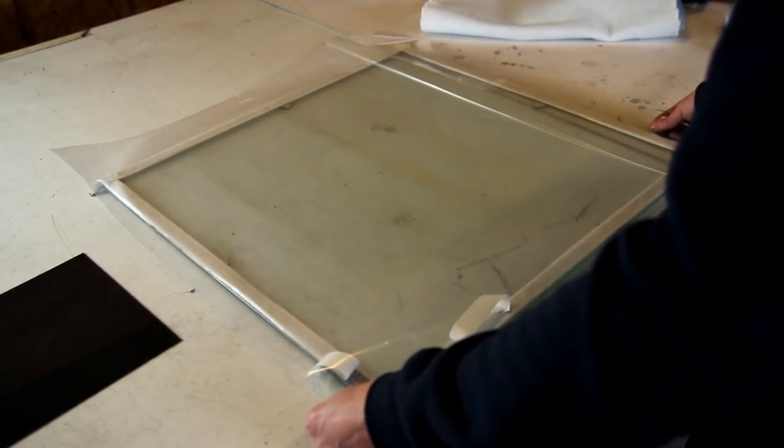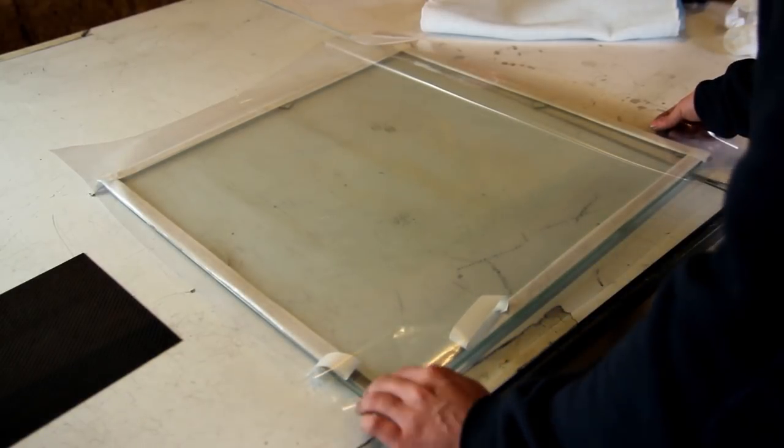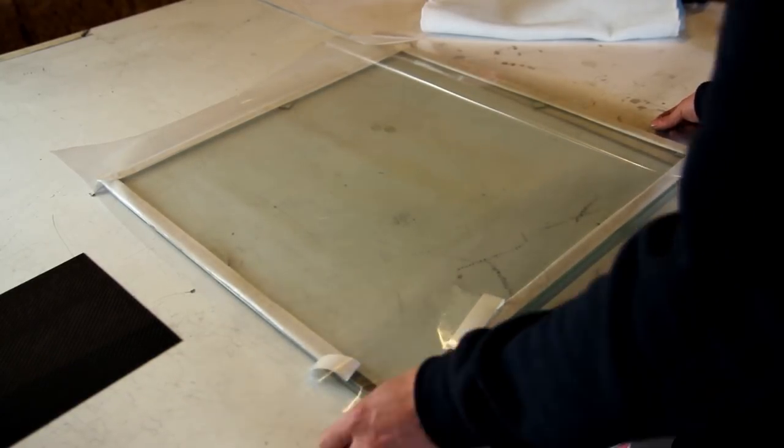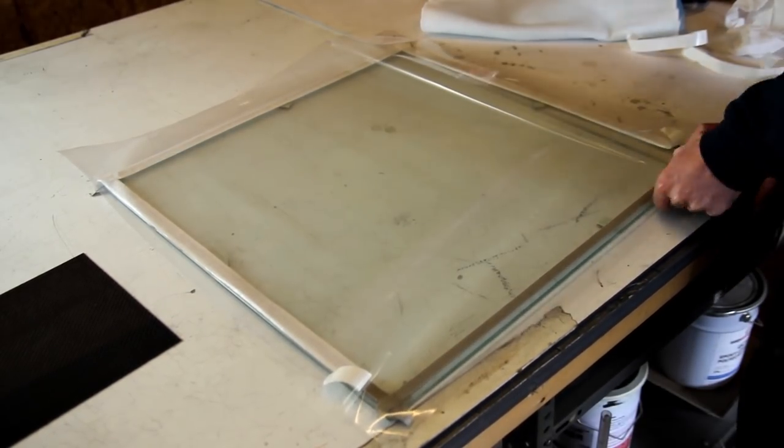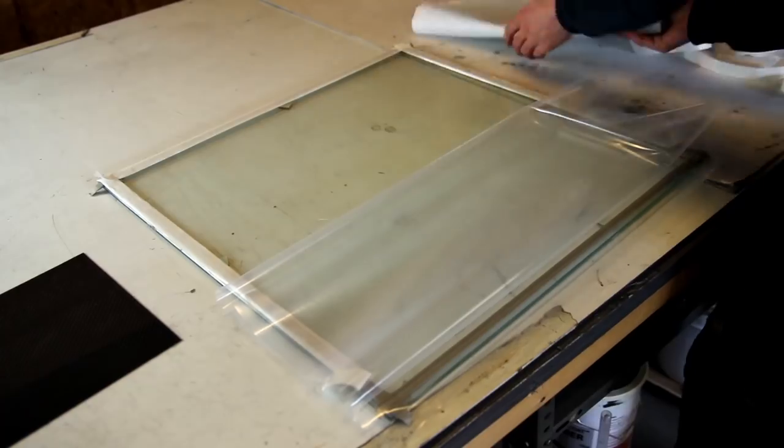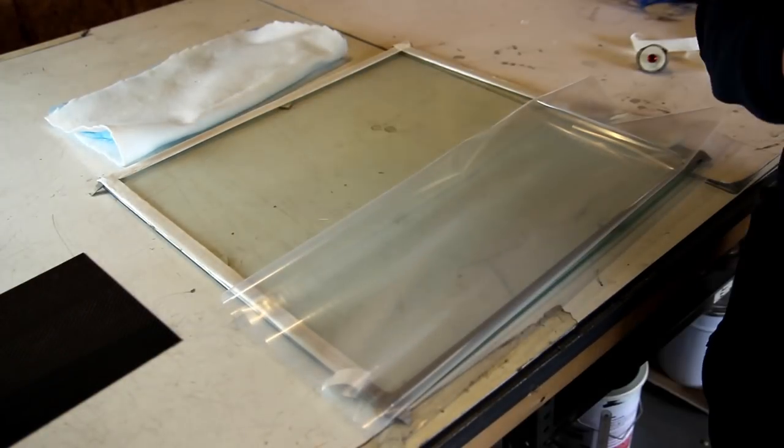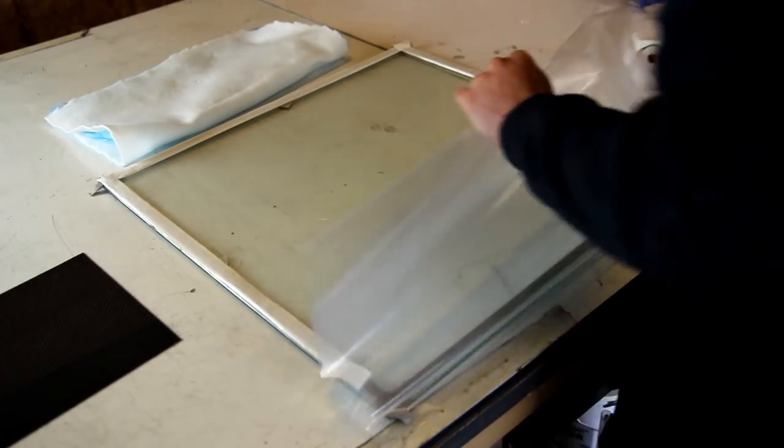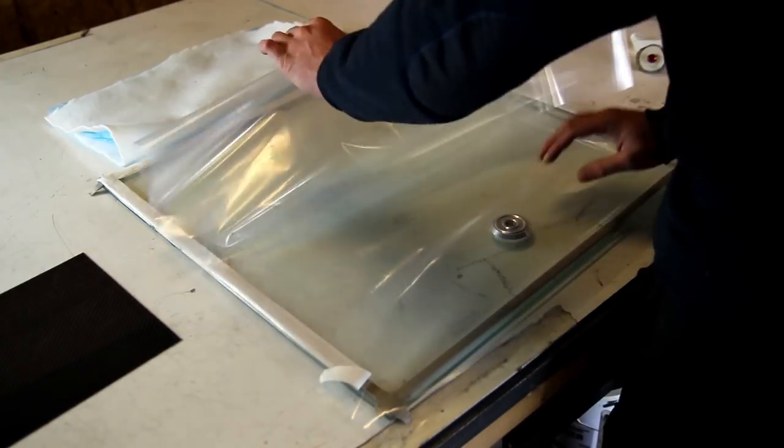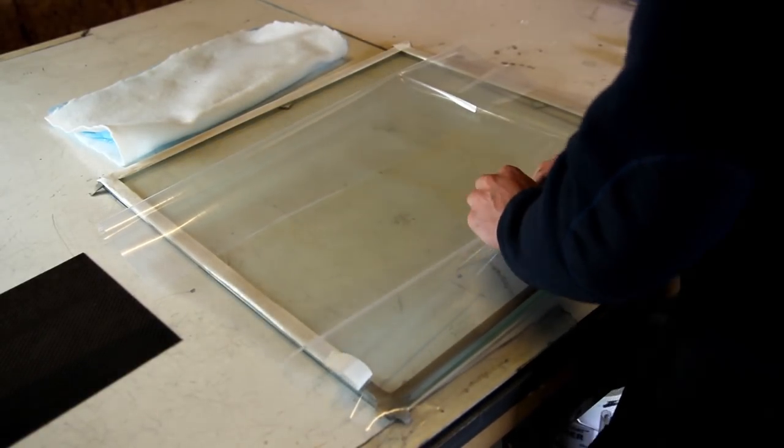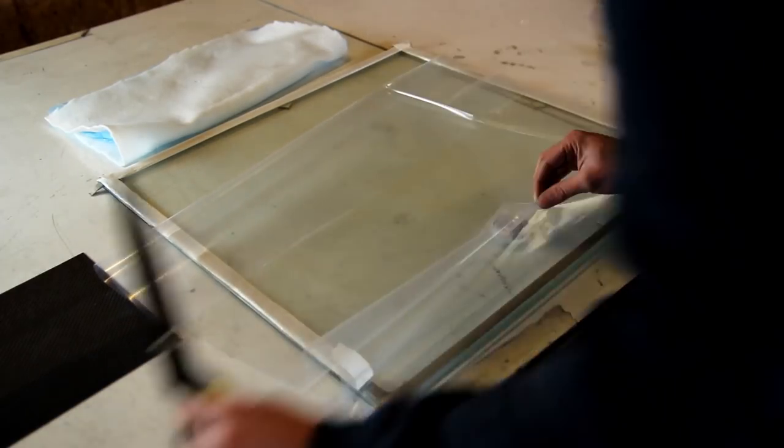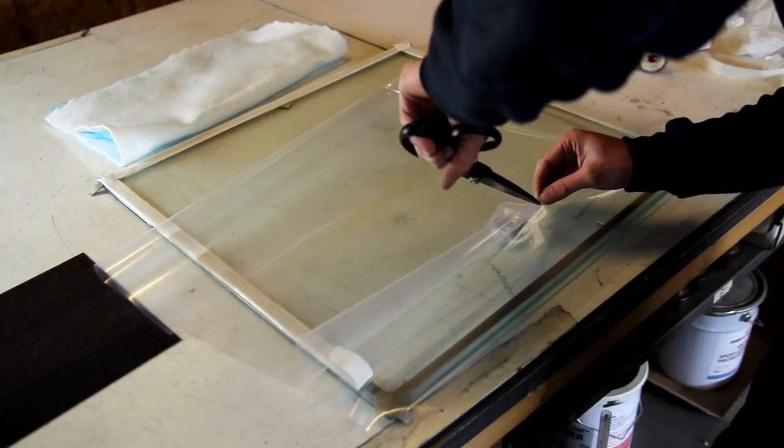So I'm just using a regular vacuum bagging film. This is a translucent one, so it's not the green one from Easy Composites. It's just that I can buy these on a roll of 50 centimeters and it's just easier to work with than the 1 meter 50, I think, in width of the green bagging film from Easy Composites.